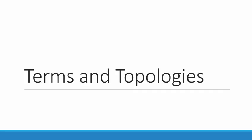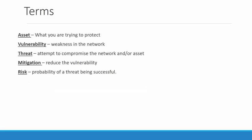Here in the first part of the first module, we're going to look at terms and topologies. There will be some terms that you see throughout that will be relatively common. We need to be aware of their definitions. Those are: asset, vulnerability, threat, mitigation, and risk.